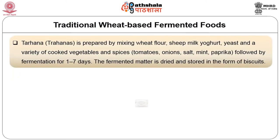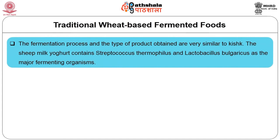Trahana is prepared by mixing wheat flour, sheep milk, yogurt, yeast and a variety of cooked vegetables and spices including tomatoes, onion, salt, mint and paprika, followed by fermentation for 1 to 7 days. The fermented matter is dried and stored in the form of biscuits. The fermentation process and type of product obtained are very similar to Kishk.